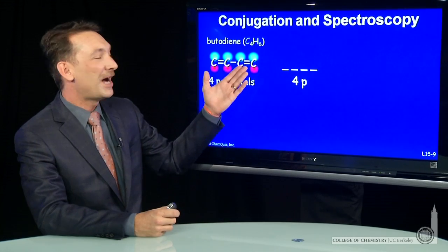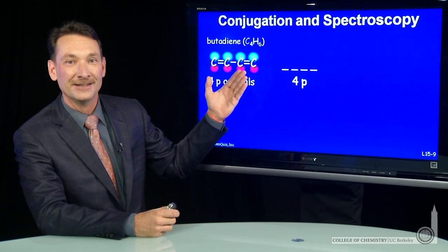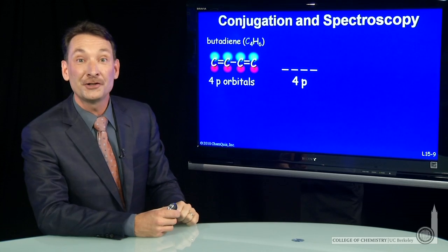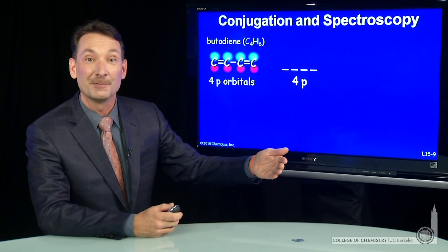Let's talk about the double bonded system, butadiene, a conjugated system of alternating double bonds and its spectroscopic implications.